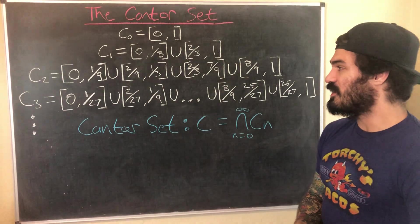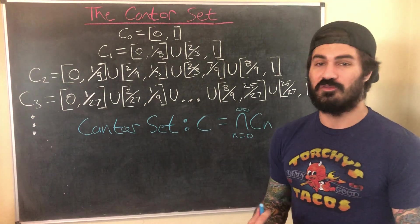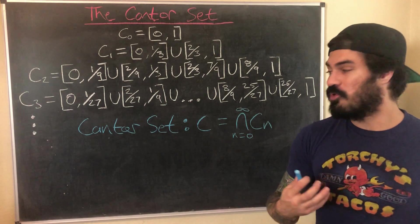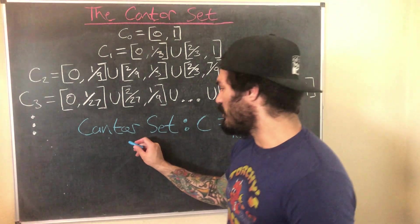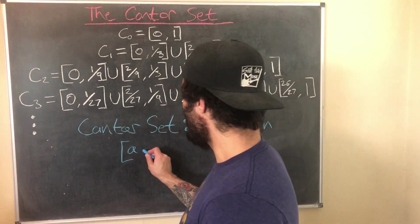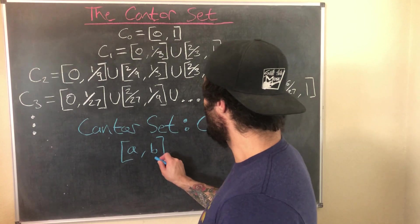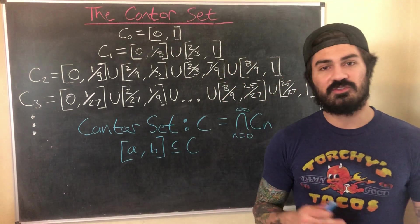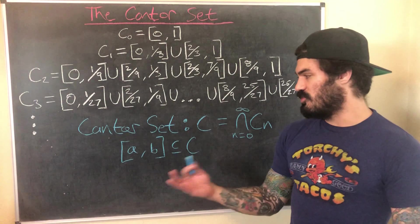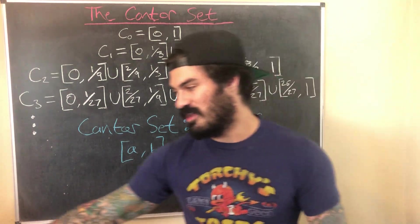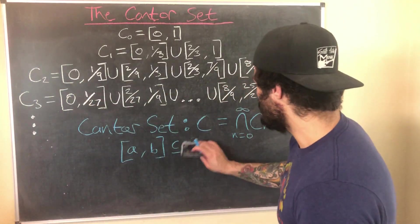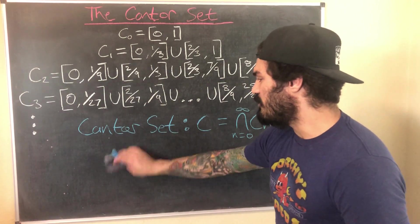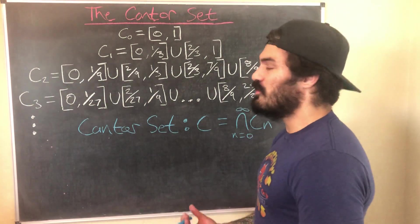Another really cool property is that once we complete this infinite intersection process, there are no intervals in the Cantor set. In other words, there do not exist real numbers a and b such that the closed interval [a, b] is a subset of the Cantor set. There are no intervals contained in it.